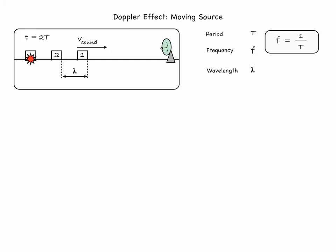At time equal to 2t, the source is about to emit a third bleep. The distance between two adjacent bleeps is the wavelength of the wave, lambda, and is equal to the distance traveled by the wave in time equal to the period t. In other words, lambda is equal to the velocity of sound times t, or v sound over f in terms of the frequency.